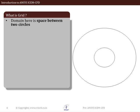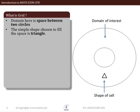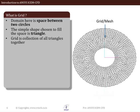To elaborate on the definition of a grid, refer to the figure on the right-hand side. In this case, the domain of interest in which we want to solve the governing equations is the region between two concentric circles. For creating the grid, we selected a simple triangular shape for the subdomain or cell. After completion of the grid generation process, the domain is filled with a set of triangles.